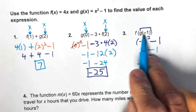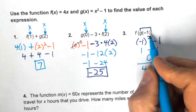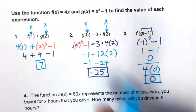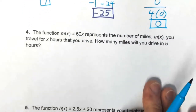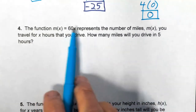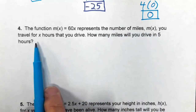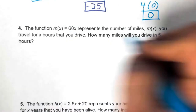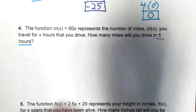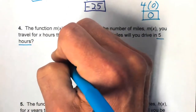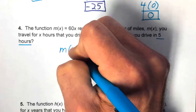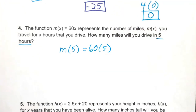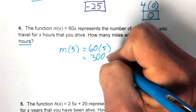Remember: take care of the inside function first, then substitute that result into the outer function. Number four: the function m(x) = 60x represents miles traveled for x hours. For 5 hours, we find m(5) = 60 times 5 = 300 miles.